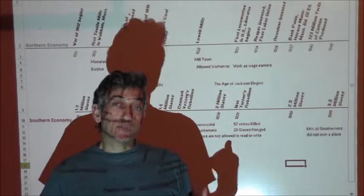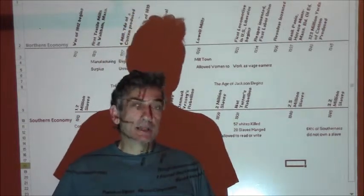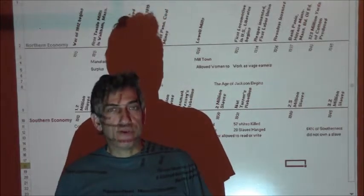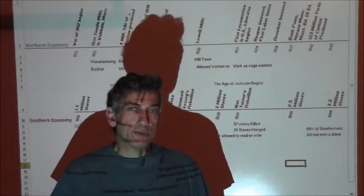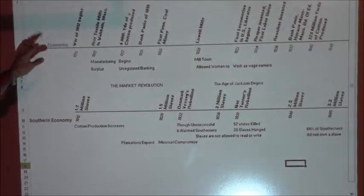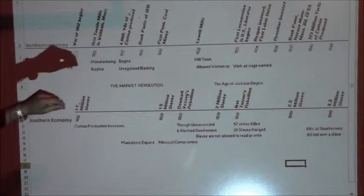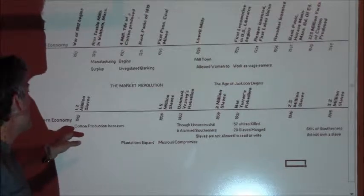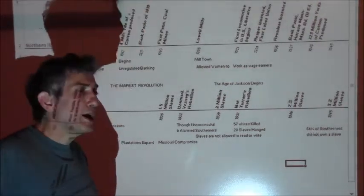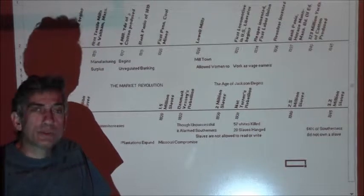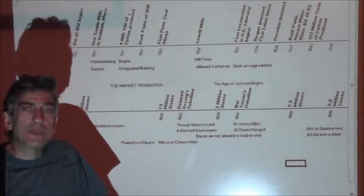What I have behind me is a spreadsheet showing developmental aspects of the South and the North from the War of 1812 to about 1850. It may be a little difficult to see in this presentation, but the spreadsheet will also be in the folder on the website under Topic 8. On the upper part is the Southern economy and on the bottom part is the Northern economy. It starts in 1812 — the War of 1812 begins and at the same time cotton production increases. There were 1.2 million slaves in the United States at that time.